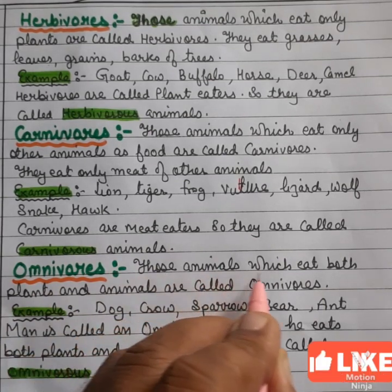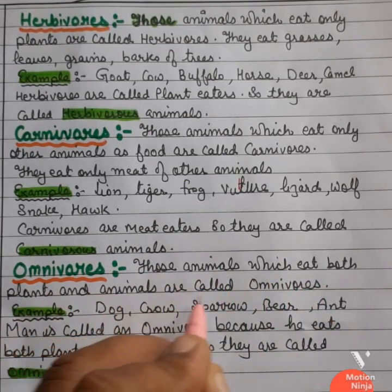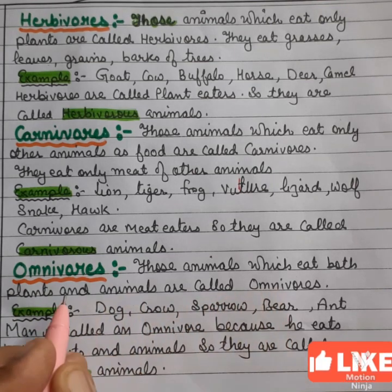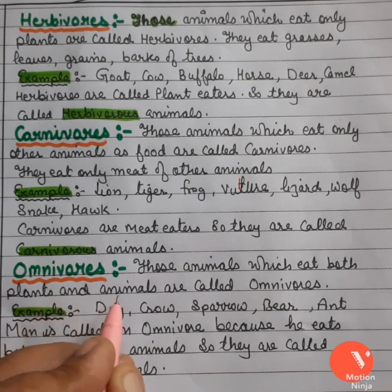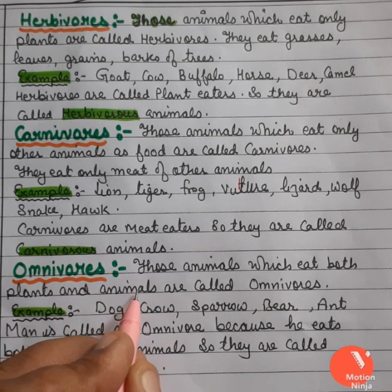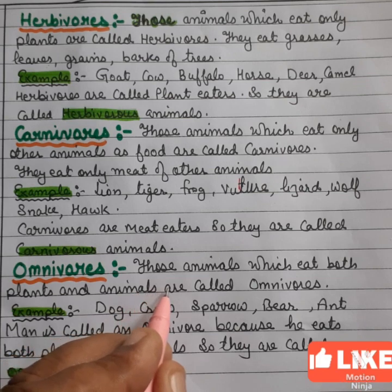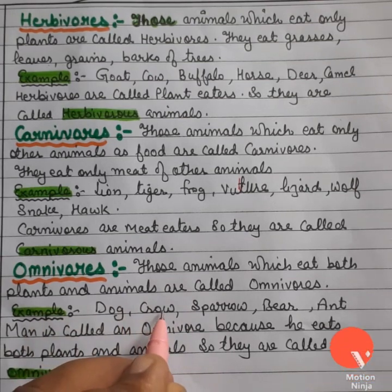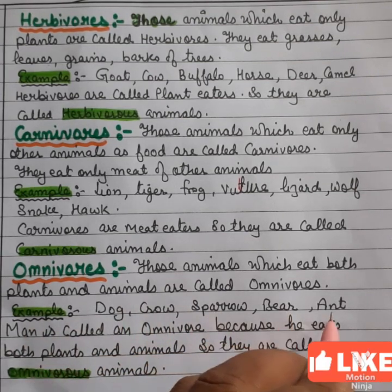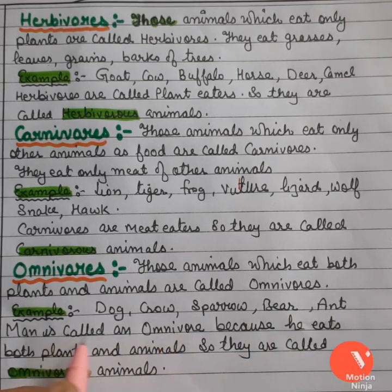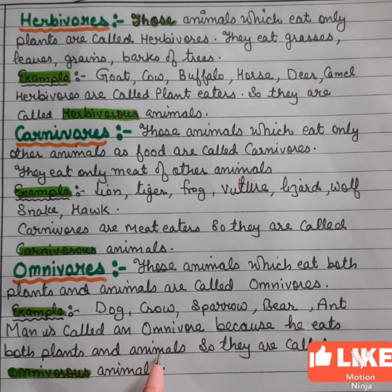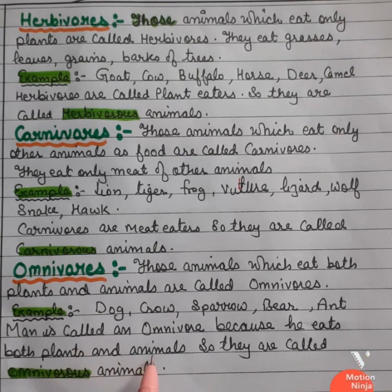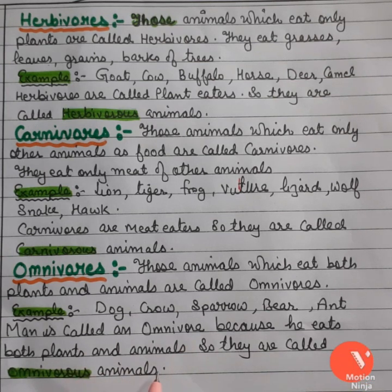Third category, omnivores. Those animals which eat both plants and animals are called omnivores. In the form of plants, animals eat leaves and branches, and in the form of animals, they get eggs and flesh of those animals. For example, dog, crow, sparrow, bear, ant. Man is an omnivore. Man comes under the category of omnivore because he eats both plants and animals — in the form of plants, he can eat leaves of spinach, and in the form of animals, he can eat meat. So they are called omnivore animals.